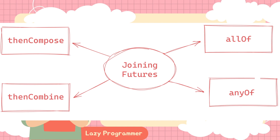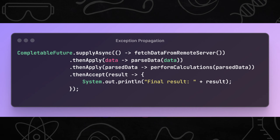With this, we are done with the combining multiple futures topic. If you have any doubt, please let me know in the comment section on any of these methods: thenCompose, thenCombine, allOf, and anyOf. Now we will move to the second topic for today, which is exception handling. We can see that proper exception handling was not present in the case of Future, and to overcome that, CompletableFuture was equipped with proper exception handling functions.